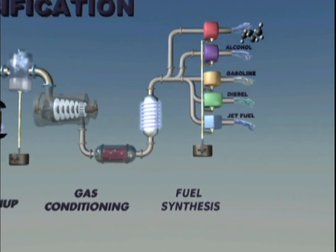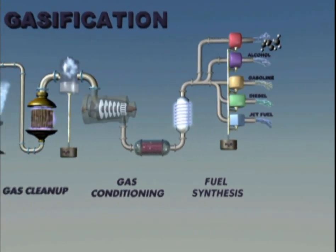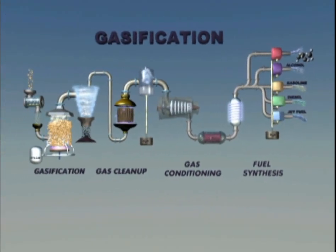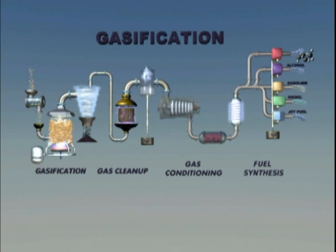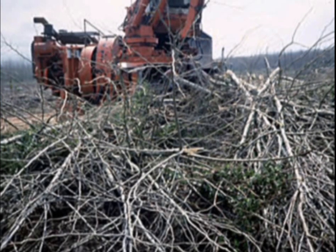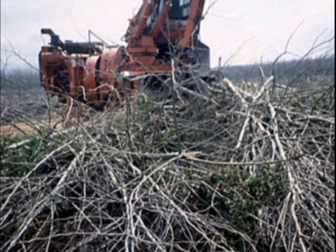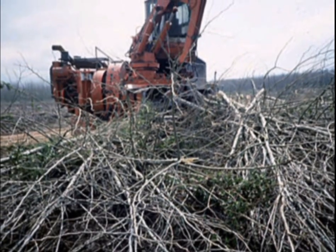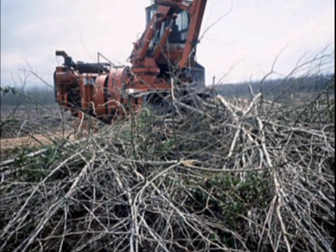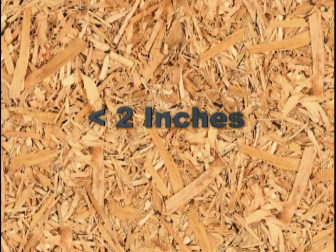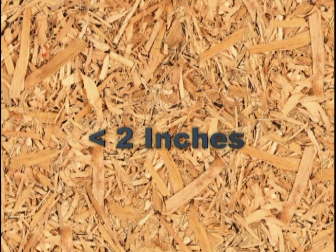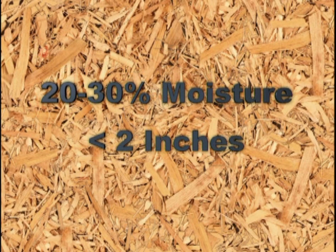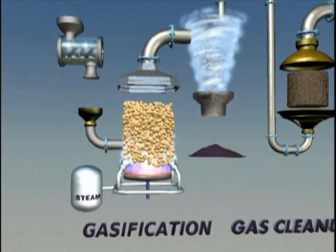Gasification occurs at relatively high temperatures. Here's one example of a gasification conversion process. Wood material such as forest residue is a common feedstock for the gasification process. For best results, feedstock wood chips are no more than 2 inches in size and have 20% to 30% moisture content by weight, depending on the gasifier.